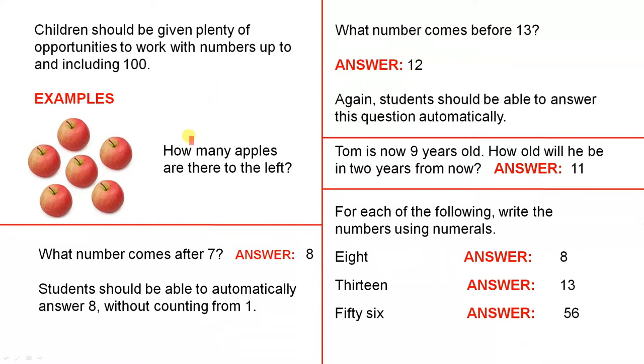Now here are some examples. The first one is, how many apples are there to the left? Now if you can scan this whole group immediately you will see that there are 6 apples. But if you can't do that you just go 1, 2, 3, 4, 5, 6. So you can do that just via counting.